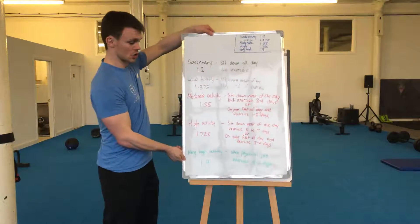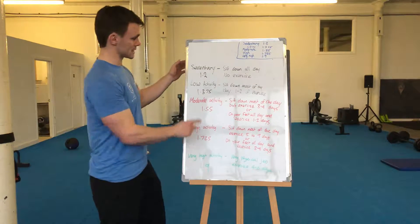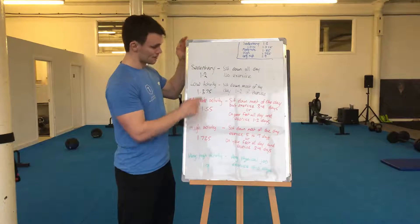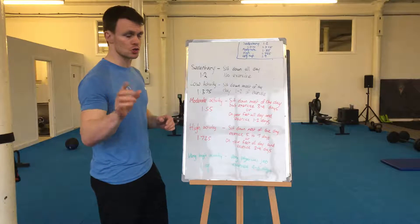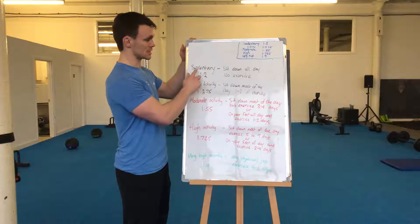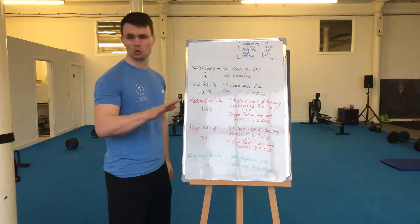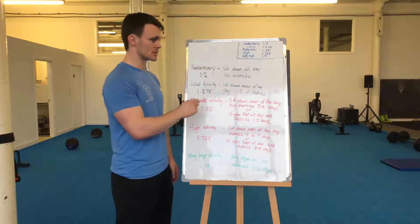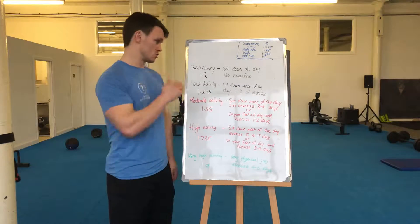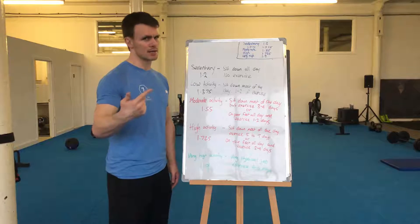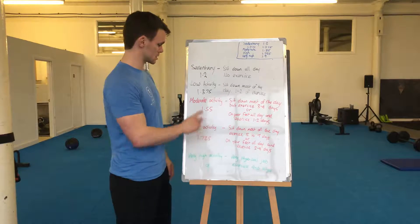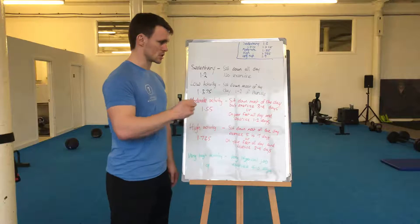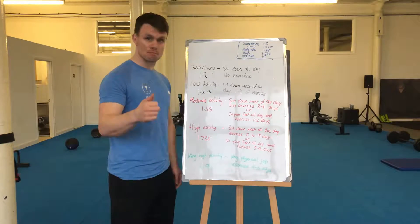Step two, we need to choose an activity level. Each one has a multiplier that we'll apply in a moment. Sedentary means you sit down all day and do no exercise. Low activity means you sit down most of the day but exercise one to two times a week.